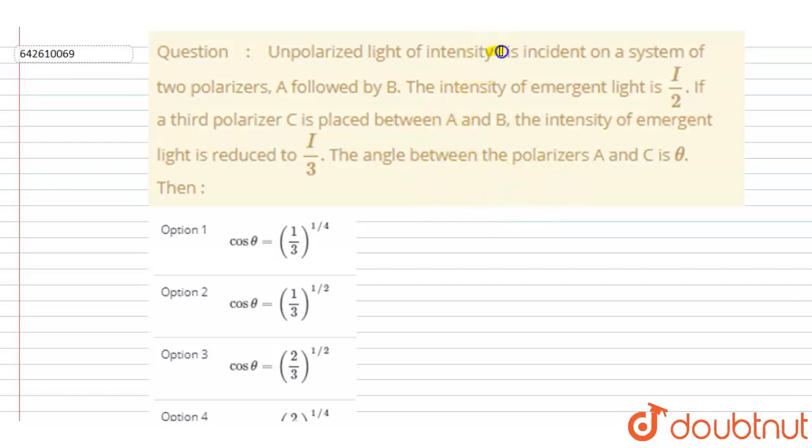The intensity of emergent light is I by 2. If a third polarizer C is placed between A and B, the intensity of emergent light is reduced to I by 3. Then the angle between A and C is theta. Find the value of theta.